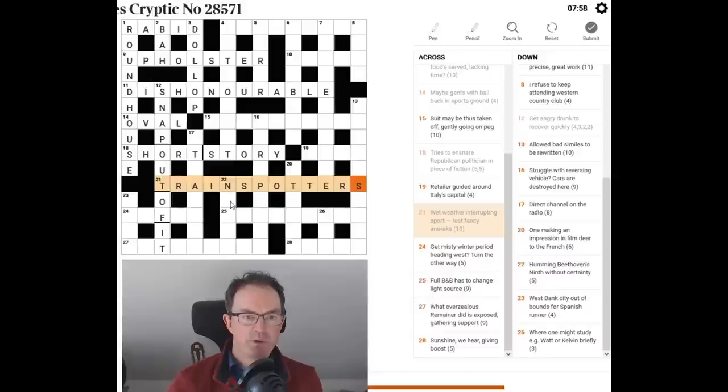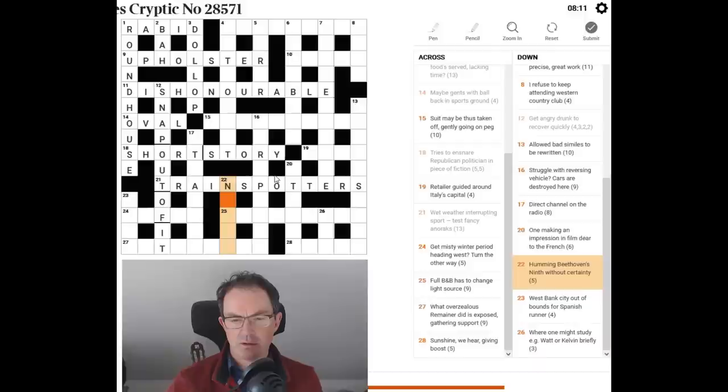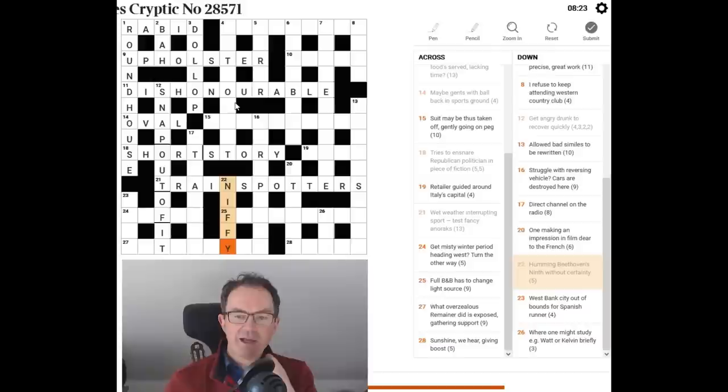Now what should we do? I think probably we ought to keep going with first letters because they've been so helpful. So humming. Beethoven's ninth. Without certainty. Humming. Humming can mean like smelly. Niffy. Beethoven's ninth is the letter N. That's beautiful. That's a really good clue. I really like that clue. Humming Beethoven's ninth without certainty. So Beethoven's ninth letter is an N. And then if something is without certainty it's iffy. So it is niffy. And we continue.